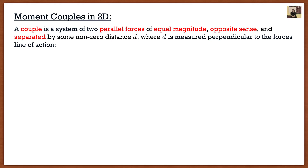We're going to start off with the basic case. The best way to show you guys something is in 2D, and then we will extend it to 3D afterwards. A moment couple system is a set of two parallel forces — so if I was in the vertical direction, I'd have one force here and another force here. They have equal magnitude and opposite sense, so one would be going upwards of, let's say, 10, and the other going downwards of 10. The final requirement is that they're actually separated by some non-zero distance. If the two forces are parallel, equal magnitude, and opposite, but they're right on top of each other, then it's not a couple.